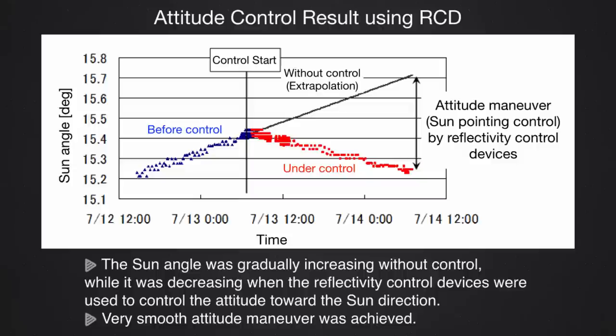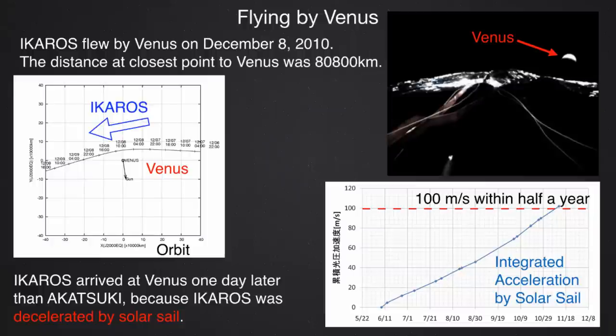From the difference between the estimated line and the control line, we evaluate the RCD control device. By using the RCD, we can control the attitude of the sail about 1 degree per day at 2 RPM. After demonstrating all the technology required for the solar sail, we completed the full-success mission. Ikaros flew by Venus as shown in this figure. This image was taken at the Venus flyby phase, and we evaluated the total acceleration by solar radiation pressure. In the half-year after launch, we gained about 100 meters per second from the solar sail. Ikaros was launched together with the Venus climate orbiter Akatsuki, but arrived at Venus one day later, confirming that Ikaros had been decelerated by the solar sail.